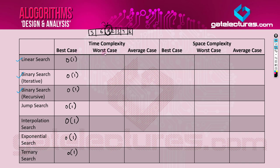For linear search, the worst case is O(n), meaning you have to search all n elements. The average case for linear search is also O(n). The space complexity is O(1) for linear search in all cases.